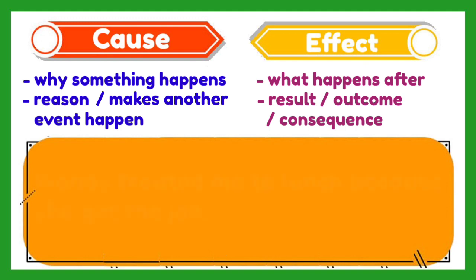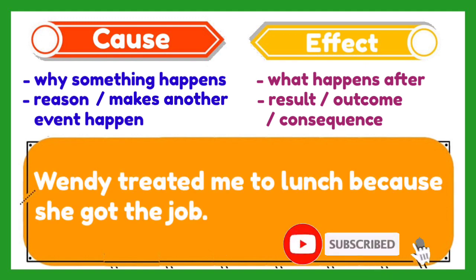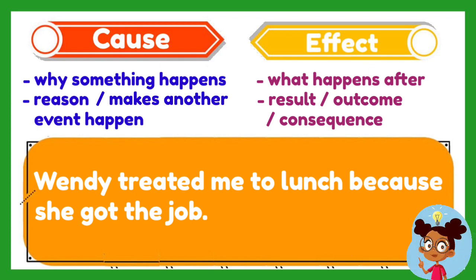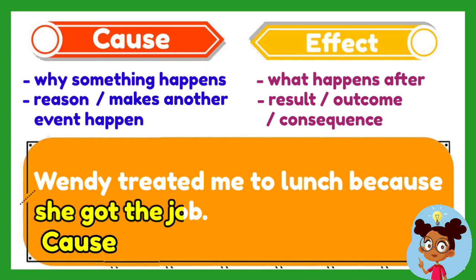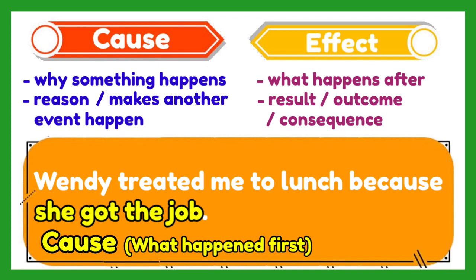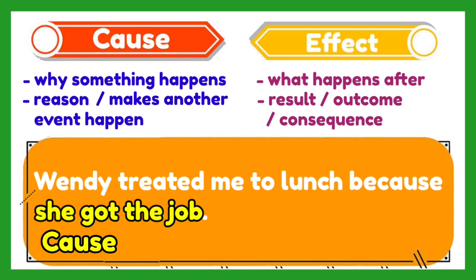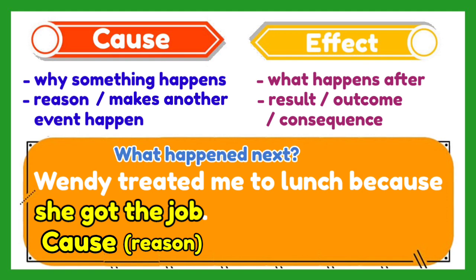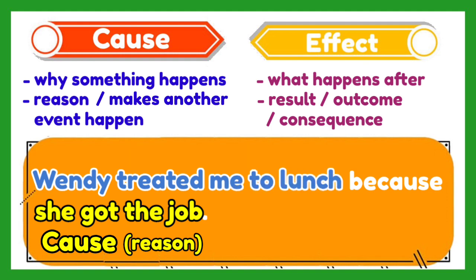Last example: Wendy treated me to lunch because she got the job. What do you think is the cause? It is that Wendy got the job — it is what happened first and the reason why she treated me to lunch. What happened next? She treated me to lunch. It is the result or the outcome. Therefore, this is the effect.